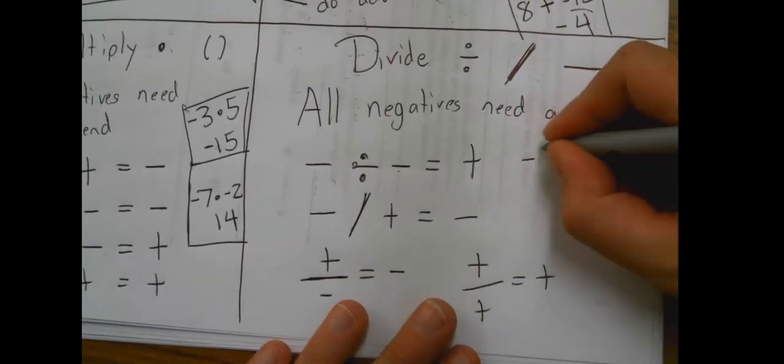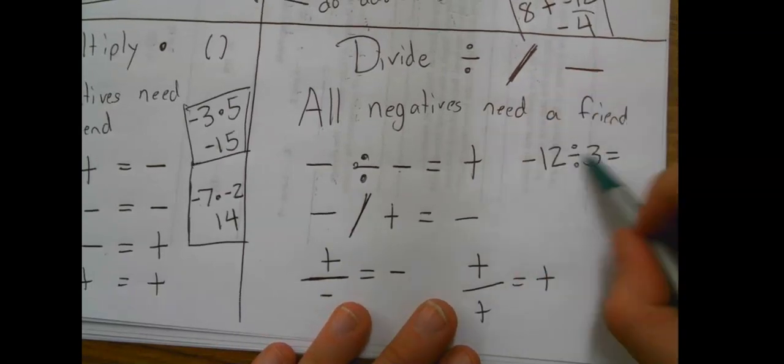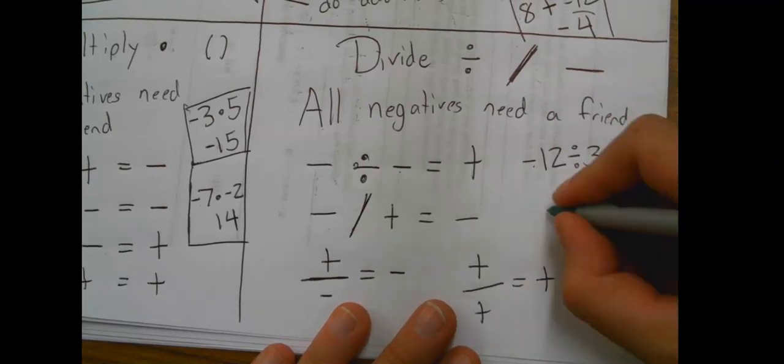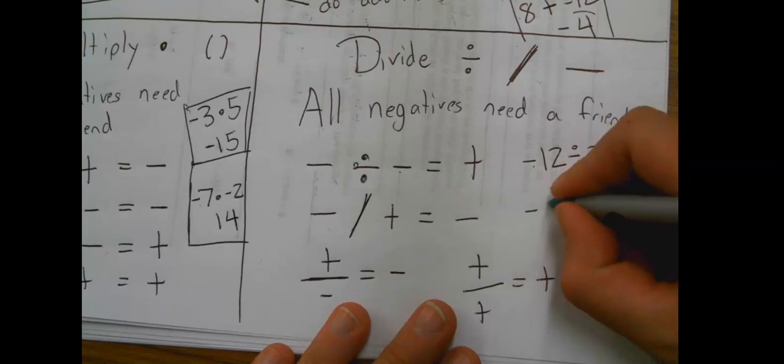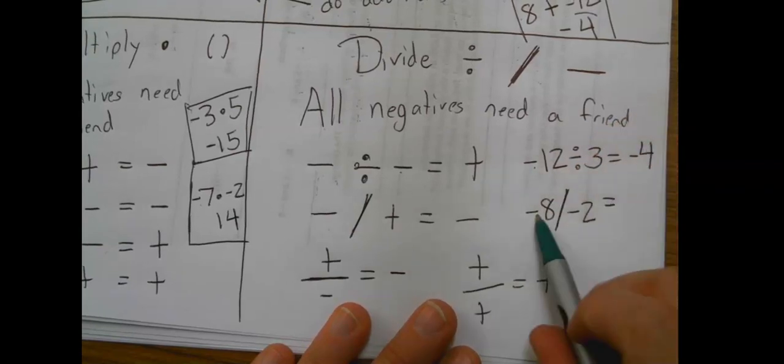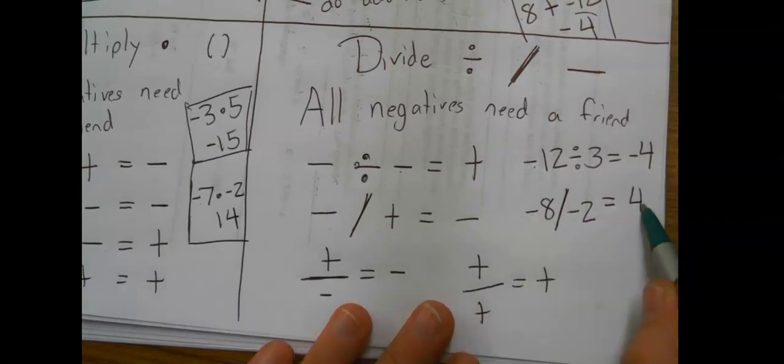So, example, negative twelve divided by three. That one needs a friend. Twelve divided by three is four. And we keep the negative. Negative eight divided by negative two. Eight divided by two is four. But because they're both negative, they're friends, so it doesn't need a friend over here.